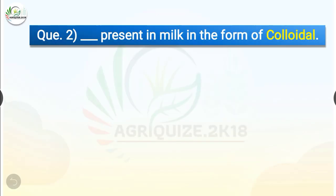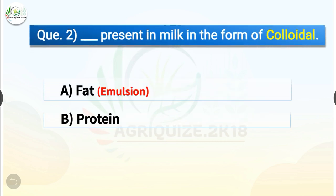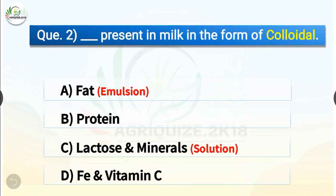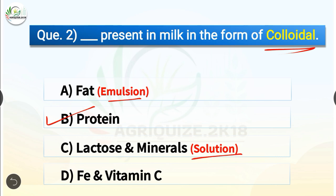Question number 2. Dash present in milk is in the form of colloidal. The options are fat, protein, lactose and minerals, or iron and vitamin C. The correct answer is option B, protein. So protein present in milk is in the form of colloidal, whereas fat is in the form of emulsion and lactose and minerals are in the form of solution. Milk is deficient in iron and vitamin C.